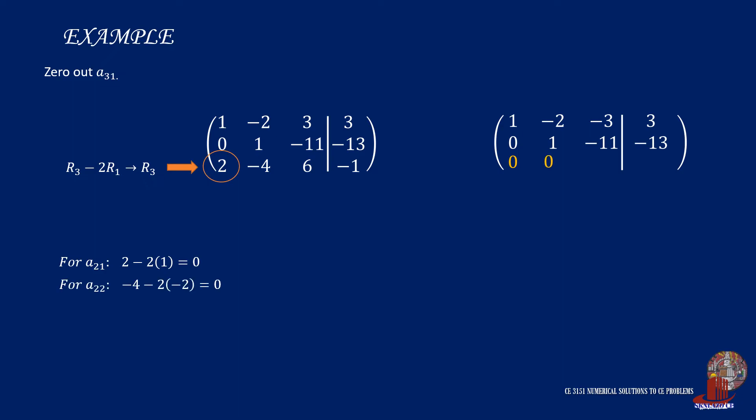Element 3,2 is negative 4 minus twice of negative 2, which is 0. Element 3,3 has 6 minus twice of 3, again 0. The new constant is negative 1 minus twice of 3, which is negative 7.